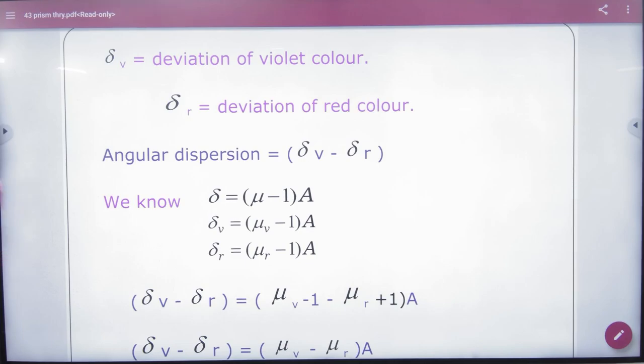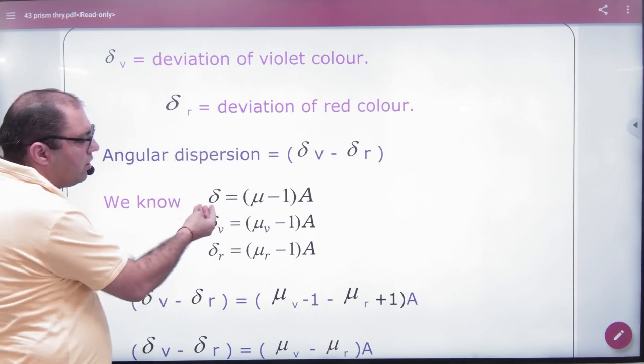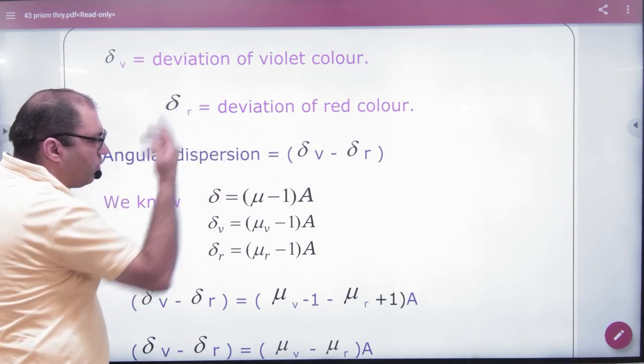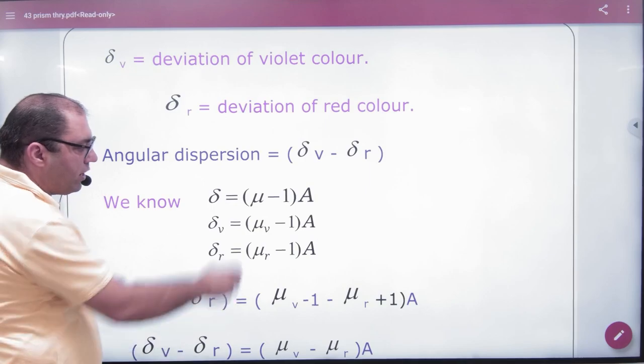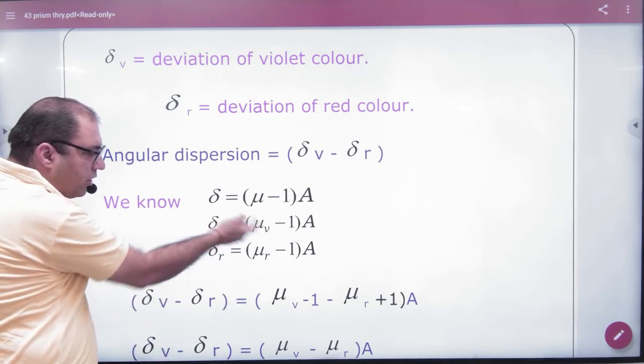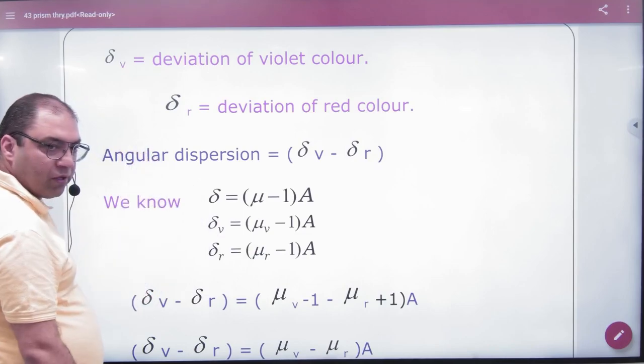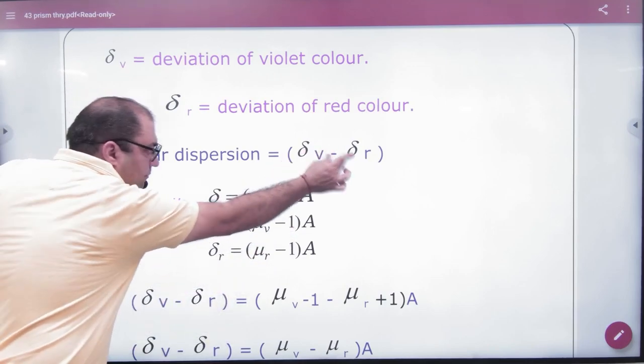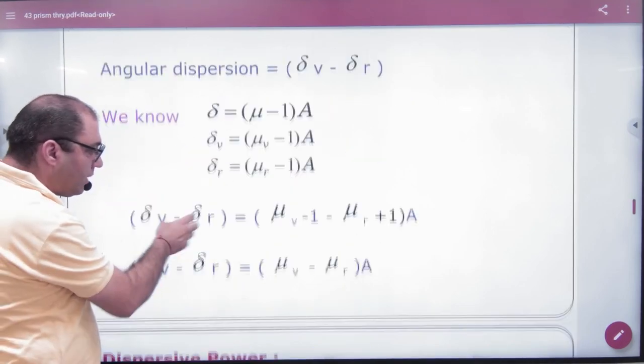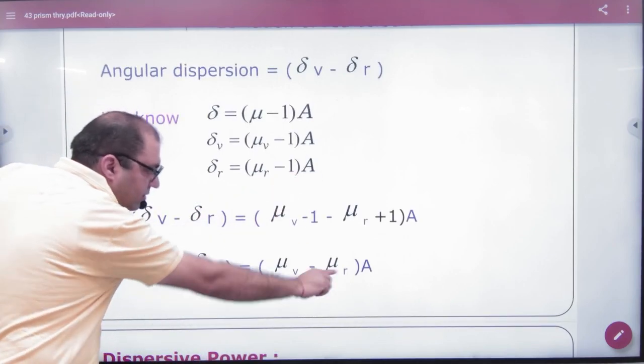So angular dispersion. Now for thin prism, I know delta is mu minus 1 into A. We have resulted in this result. If we put it in violet, then the deviation will be different. If we put it in red, then the deviation will be different. And if I put these results here and minus them, one by one cancels and I will have this result.